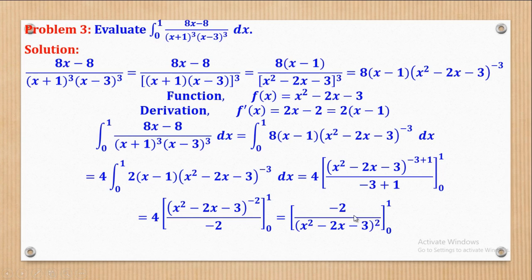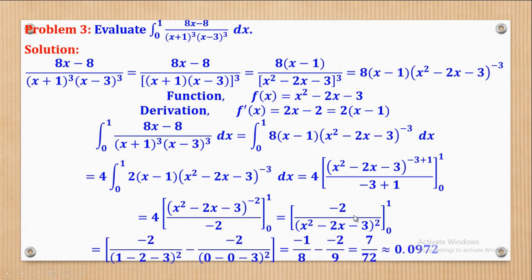The next step is to substitute the limits. Beginning with the upper limit, substitute x = 1 where x appears, then subtract the expression with the lower limit x = 0 substituted. Using the calculator, we arrive at the final answer of 7 over 72.